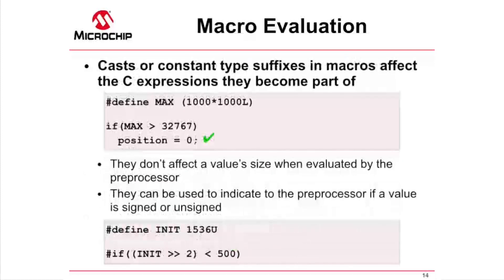If you need to change the types that are used by the compiler when evaluating a macro, you can use any appropriate feature in the C language. For example, by adding a constant type suffix. Use of the capital L suffix in the first example would not affect the size of the values used by the preprocessor if it were to evaluate this expression, but it does change the types used by the compiler. The preprocessor always uses the same size to evaluate expressions, but you can force expressions to be treated as signed or unsigned. The last example shows code using the capital U type suffix, which will require the preprocessor to evaluate an unsigned right shift.